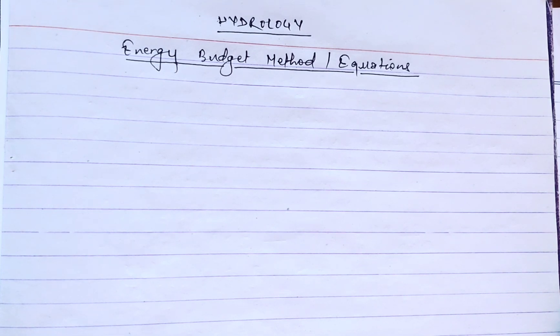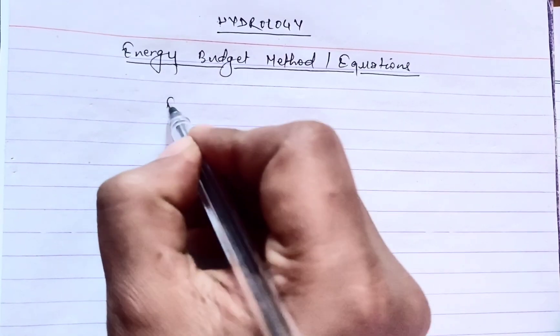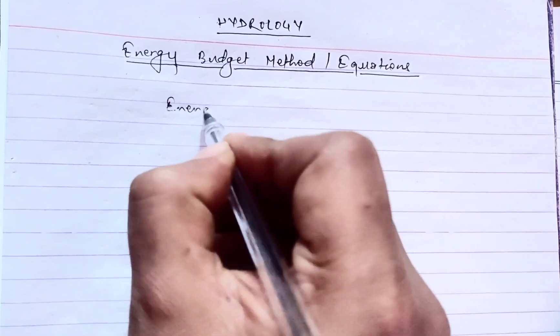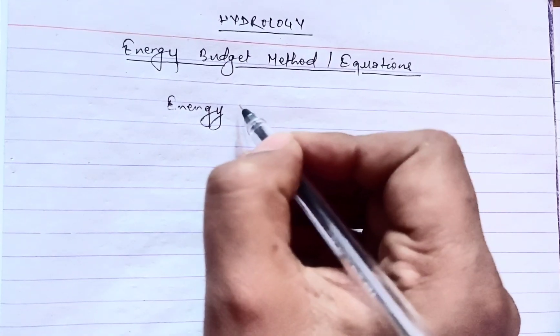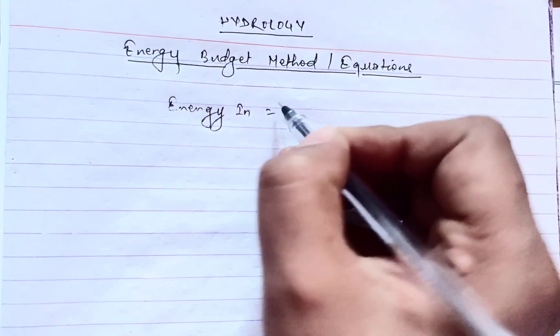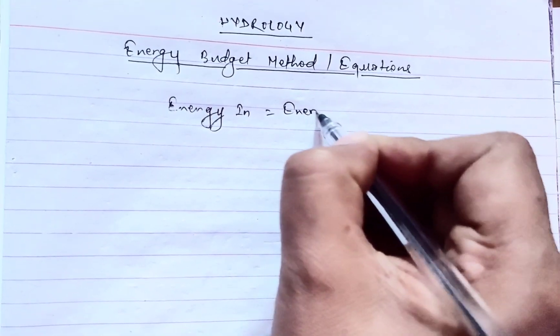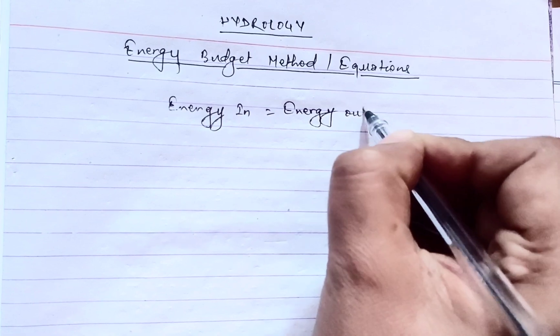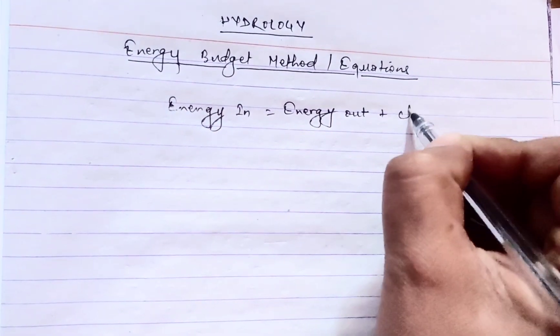The energy balance equation in hydrology is often expressed as: energy in equals energy out plus change in storage.